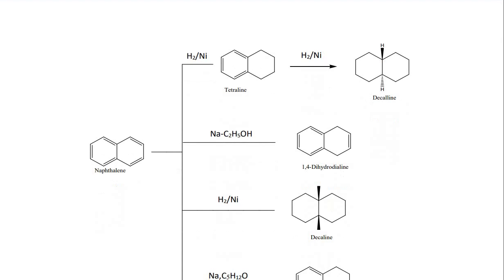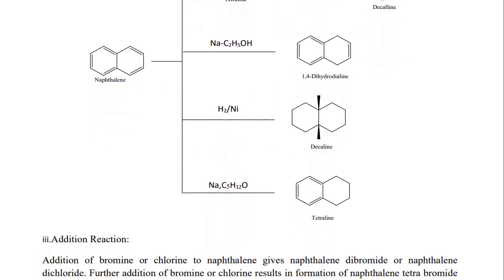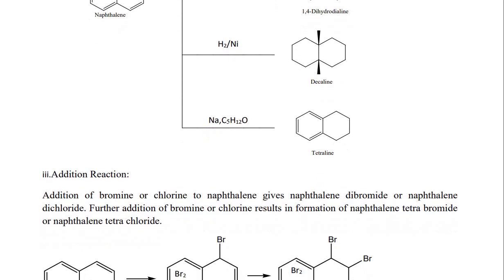Reduction of naphthalene: in the presence of H2 with a nickel catalyst, tetraline is formed. Further reduction with H2/Ni gives decaline. Reaction with sodium and ethanol gives 1,4-dihydronaphthalene. Reaction with H2/Ni also gives decaline, and in the presence of sodium and alcohol it gives tetraline.